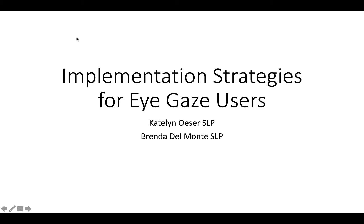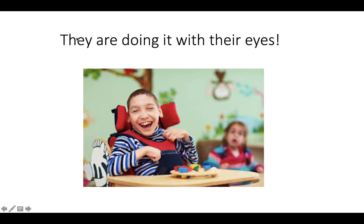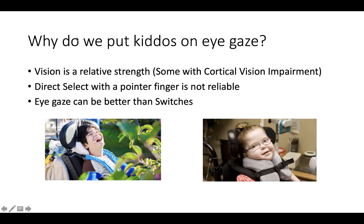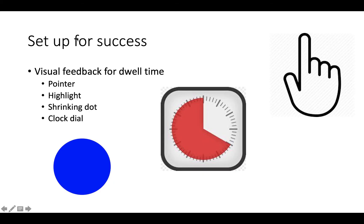This is a short video on implementation strategies for eye gaze users. Believe it or not, this is a way for them to access communication with their eyes. Why would we put a child on eye gaze? Typically we do that because vision is a relative strength — that can mean they have a visual impairment, but it is still stronger than their motor skills or hearing skills, and direct select with a pointer finger is not reliable, or eye gaze is better and faster than using switches.